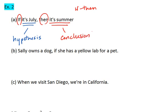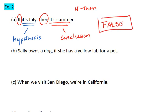Now let's think about the statement: 'If it's July, then it's summer.' To determine whether the statement is true, we assume the hypothesis is true. So we ask ourselves: whenever it's July, does that mean it must be summer? In the northern hemisphere, it does. In the southern hemisphere, however, it does not — the southern hemisphere has their winter during July. So this statement is false, unless of course we restricted it to the northern hemisphere or even just to Arizona.